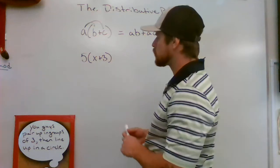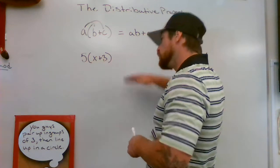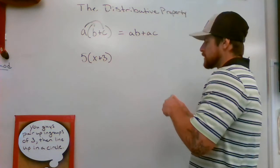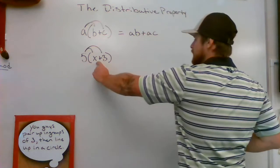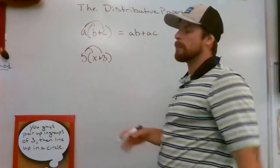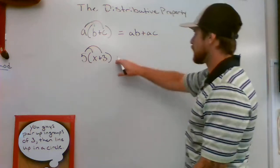And we need to use the distributive property to simplify this expression. So what I'm gonna do is I'm gonna draw my rainbow lines again. Five needs to go to the X, five needs to go to the three. We're gonna multiply those out and we're gonna get our result.